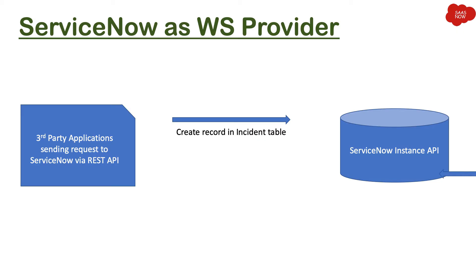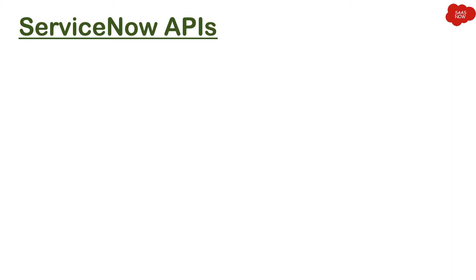For example, third-party applications will send a request via REST API to create a record in the incident table. ServiceNow will process that request and return a response with the details of whatever record was inserted.